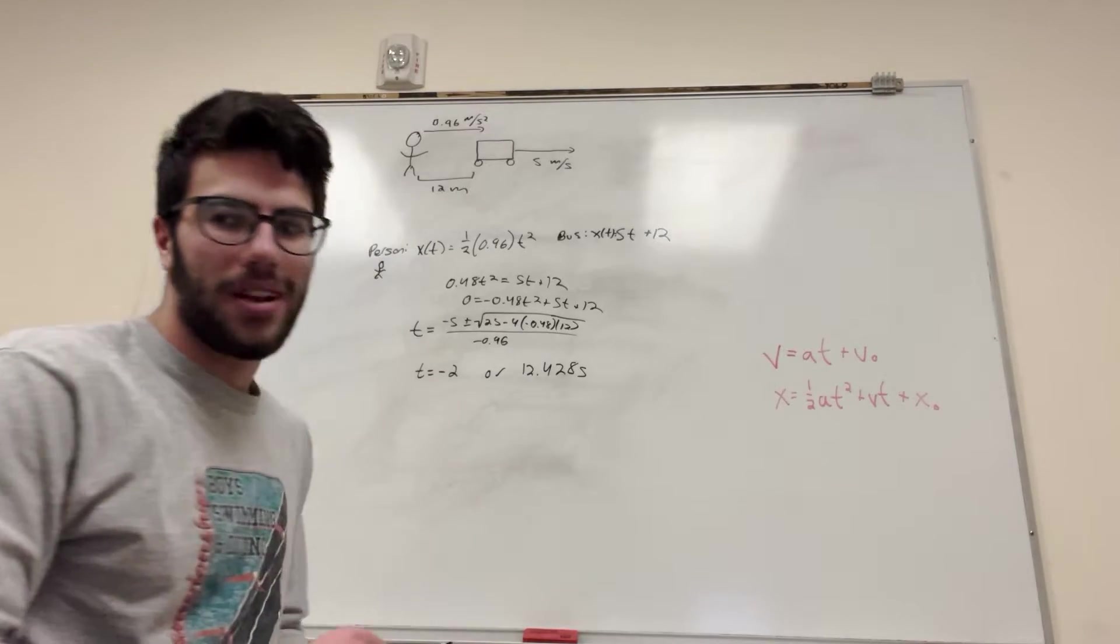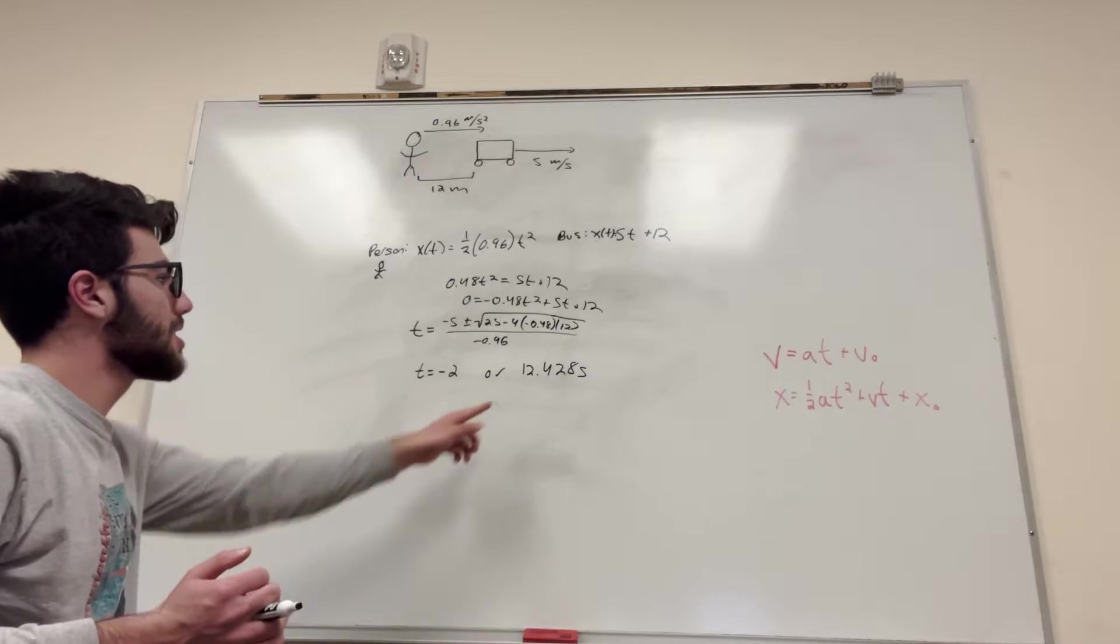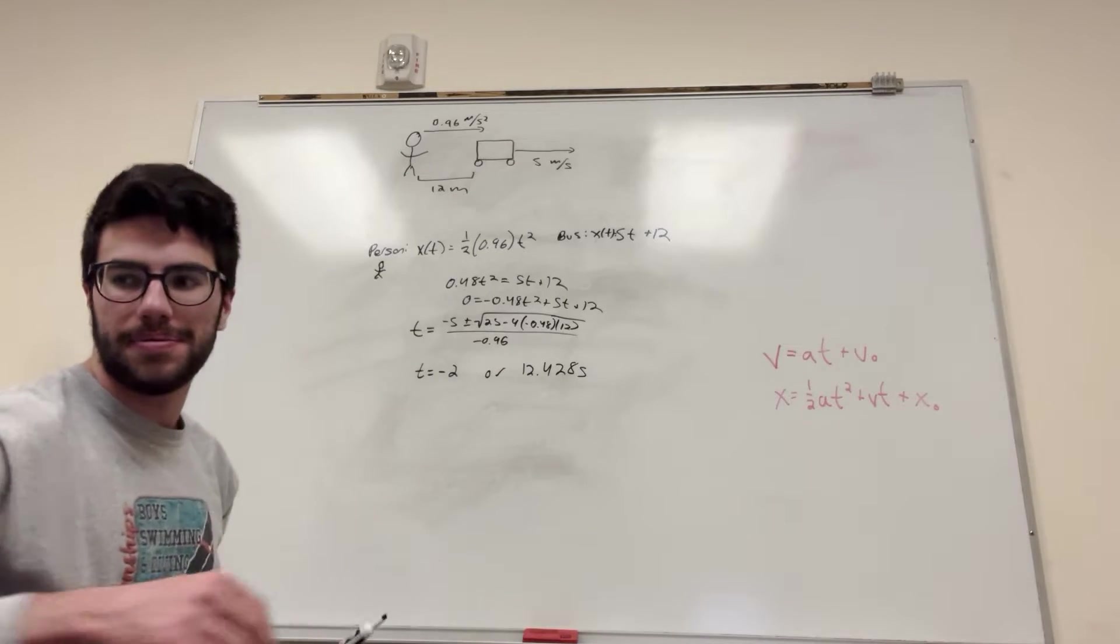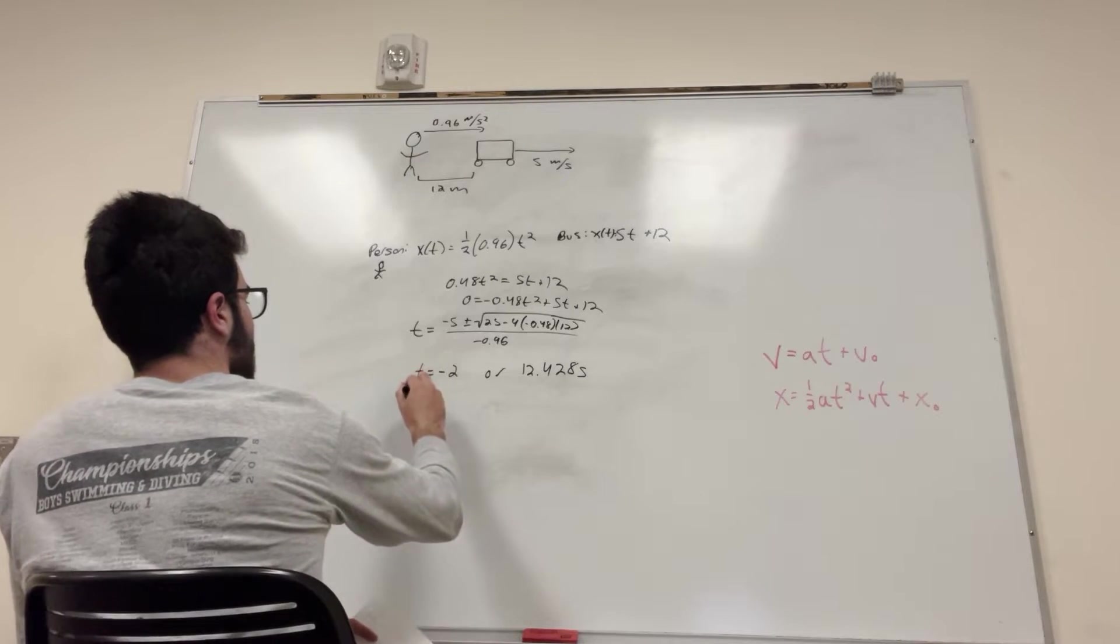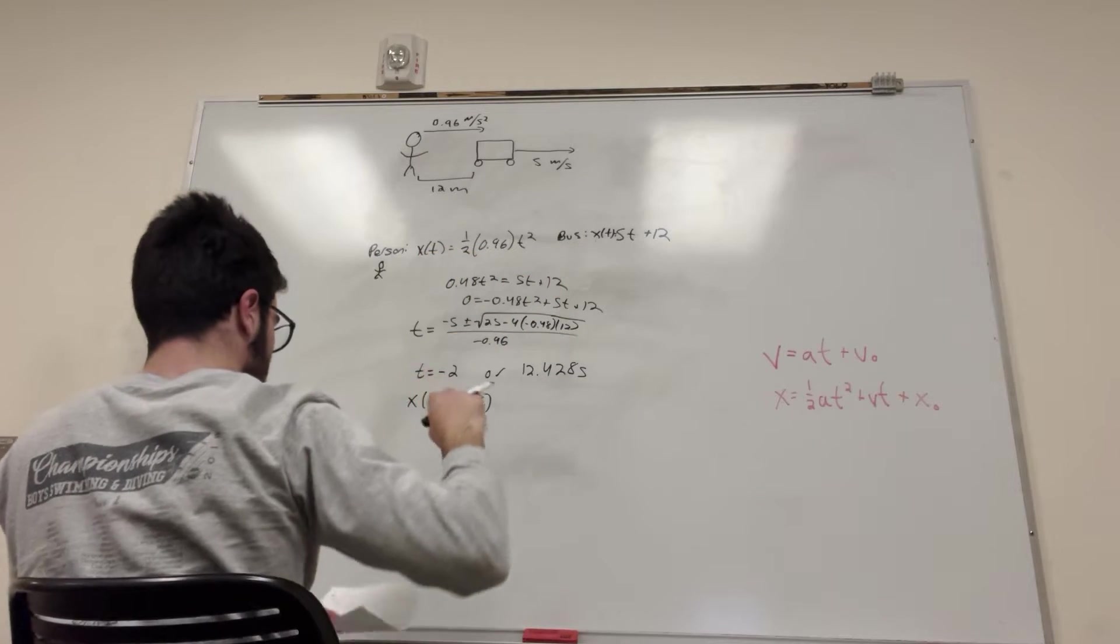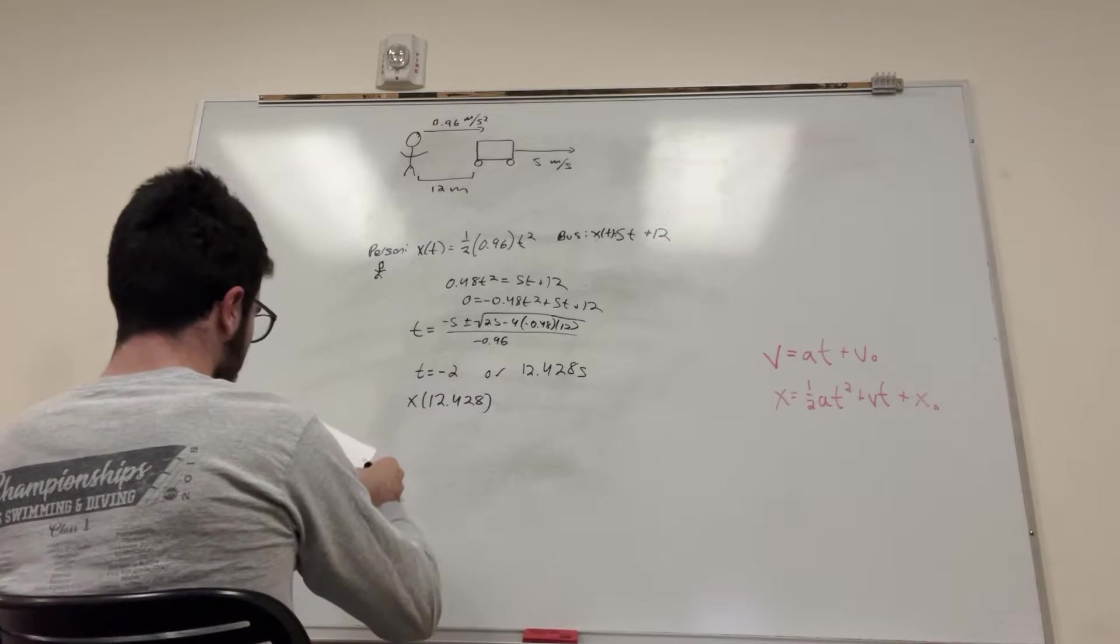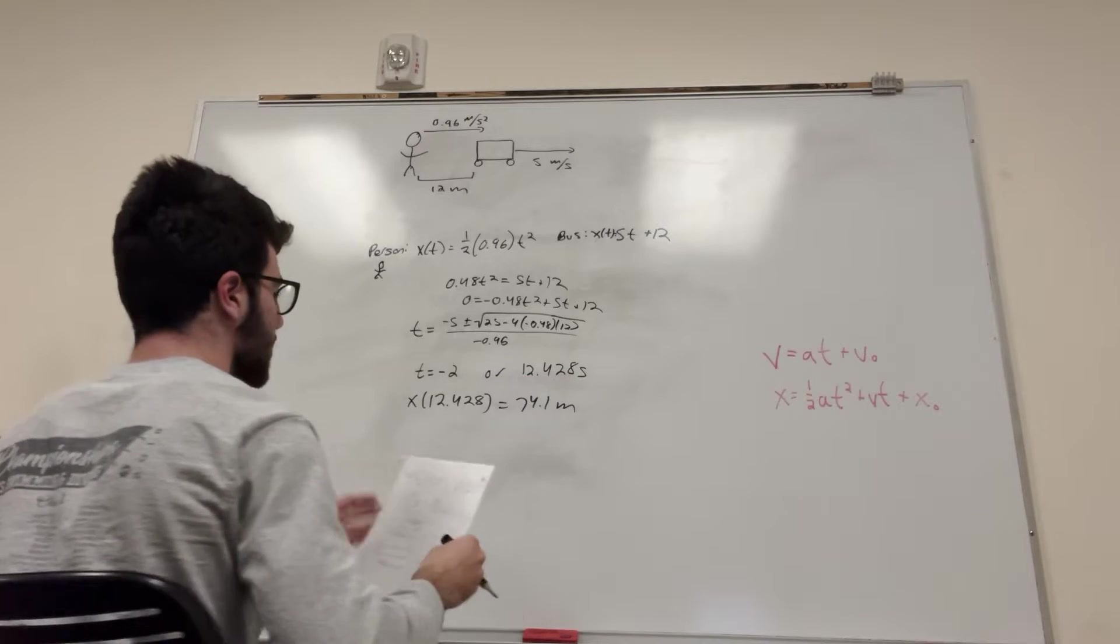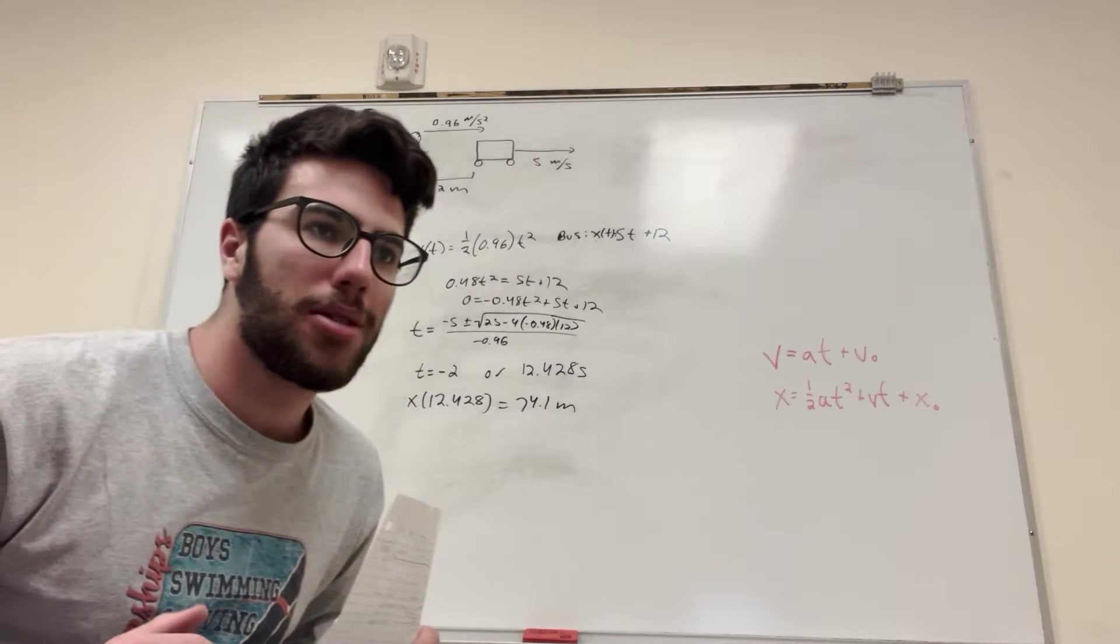This is the time that you run into the bus. Now what we have to do is plug this number into either of these equations, it's going to give you the same value. So x of 12.428, plug this t in, equals 74.1 meters. That's how far you have to run.